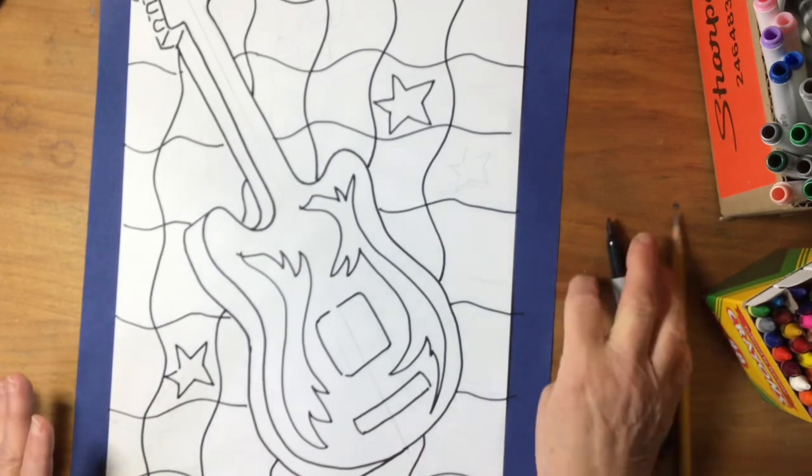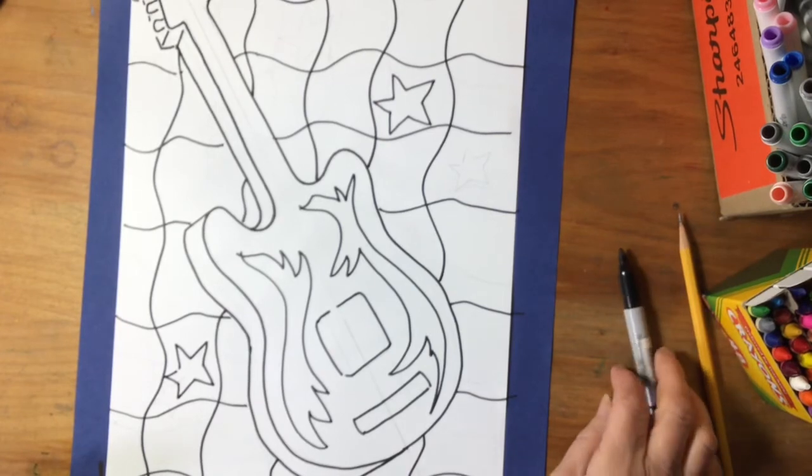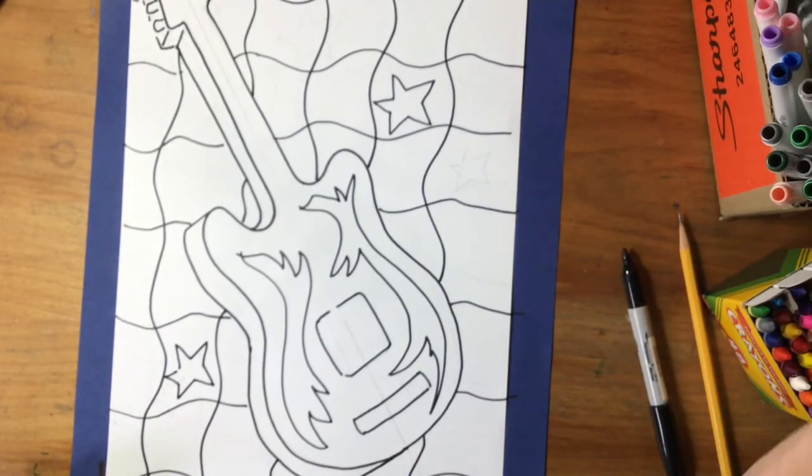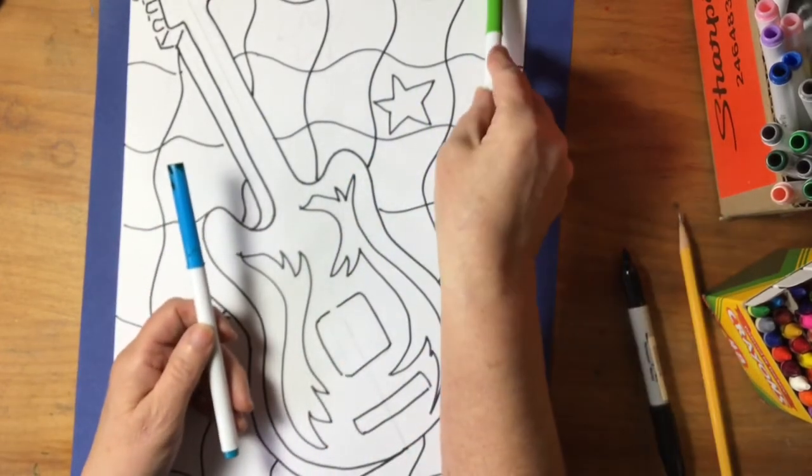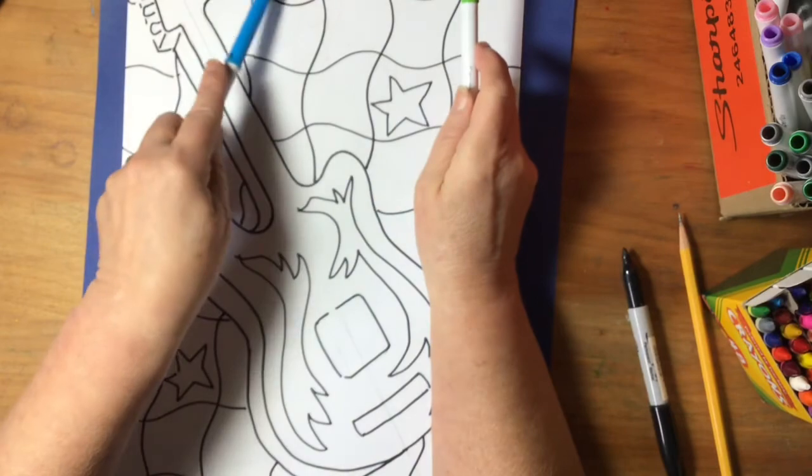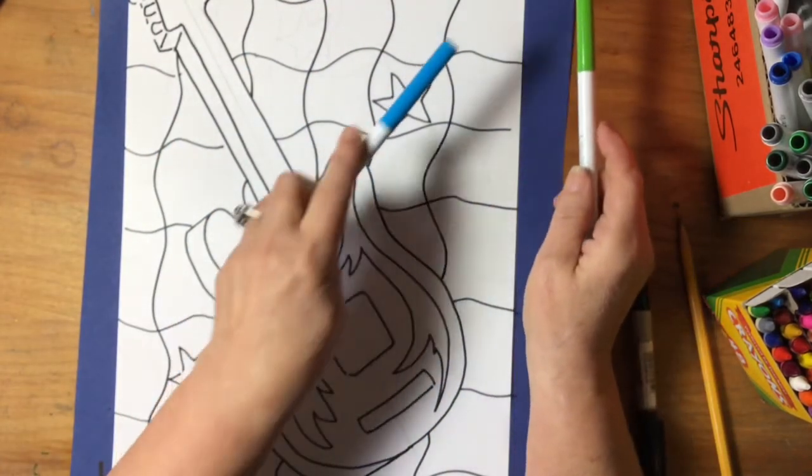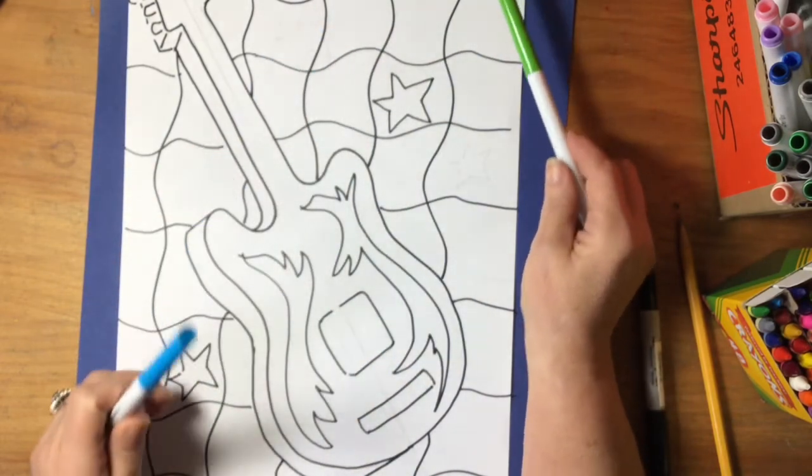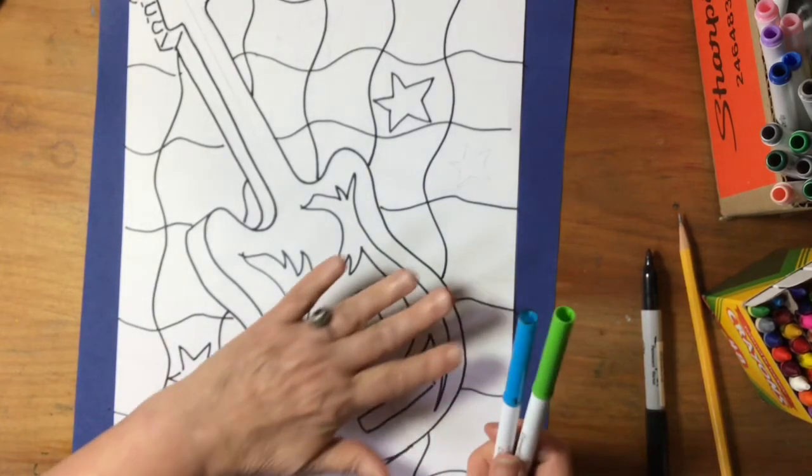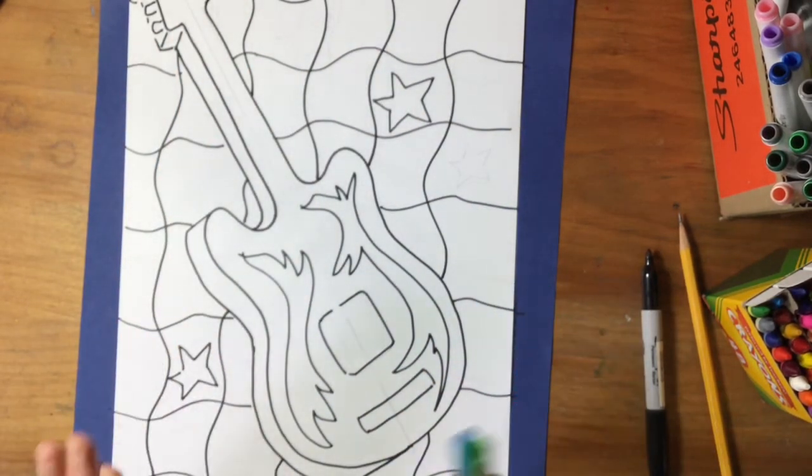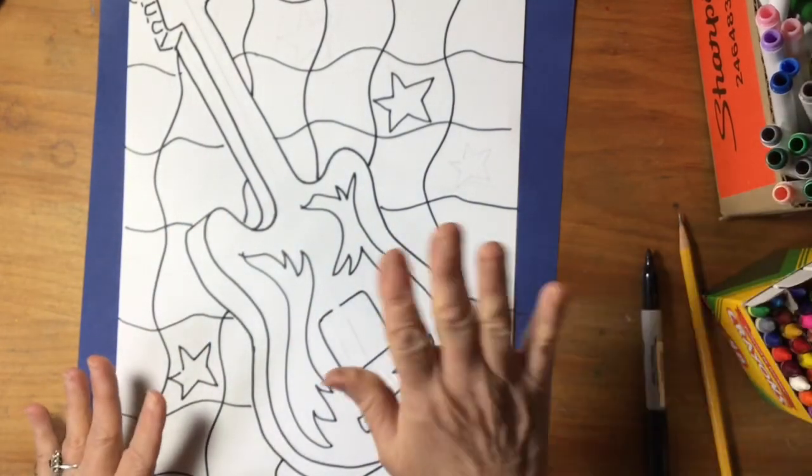And when you color this background, I'd like to have you color with alternating colors. That means if I chose maybe a blue and a green, I'd have green, blue, green, blue, green, blue. And then in the next row, I started with green, I'd have to go blue, green, blue, green. So that you're seeing a colorful checkerboard pattern. And again, we're coloring the background very, very carefully, and we're coloring the guitar itself very carefully.